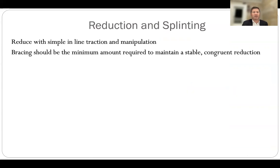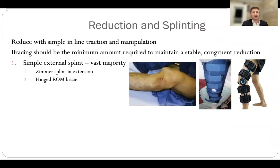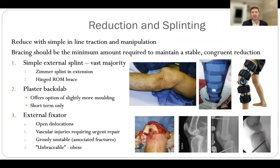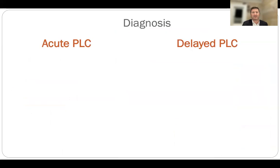To reduce and stabilize the knee, simple inline traction is usually sufficient; bracing should be the minimal amount required to maintain a stable congruent reduction. Simple external splinting with either a Zimmer splint or a hinged range-of-motion brace is sufficient. In patients presenting with an isolated posterolateral corner injury, a hinged range-of-motion brace is my first step. A plaster backslab is used in the short term in a small number of patients, and external fixation is reserved for very severe injuries such as open dislocations or vascular injuries requiring repair.